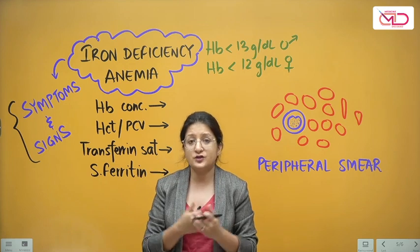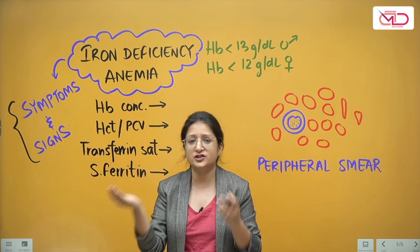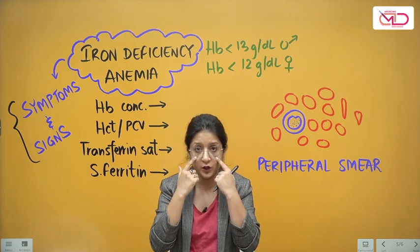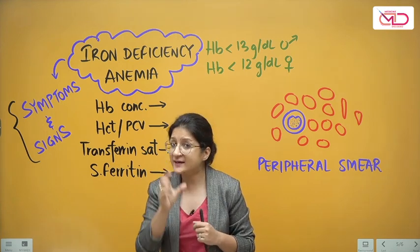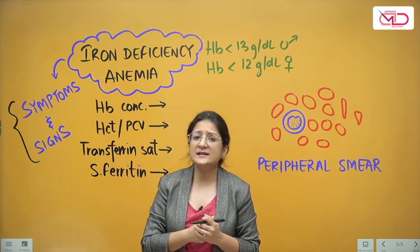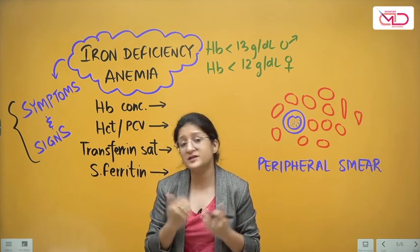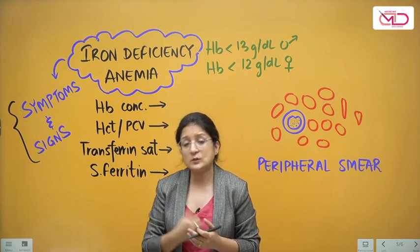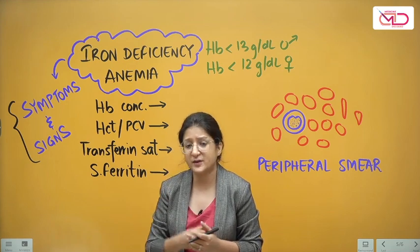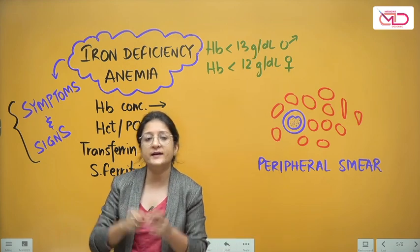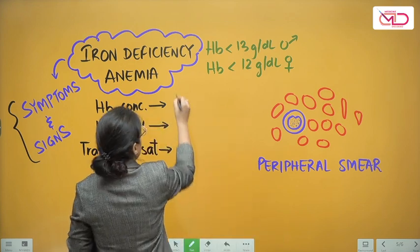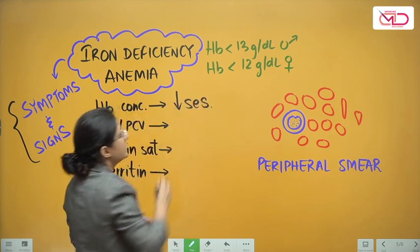Signs include pallor — paleness of the skin — which would be a late change. Early on, pallor can be appreciated in the palpebral conjunctiva of the lower eyelid. There can be a pale tongue, glossitis (atrophic and pale tongue), and very pale palms. Varying degrees of pallor can be present in cases of iron deficiency anemia or any kind of anemia.